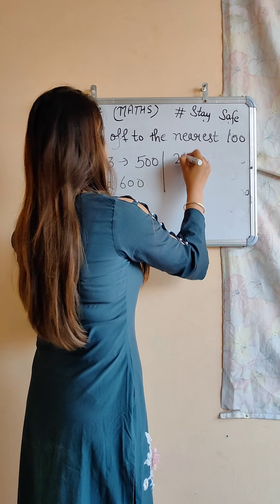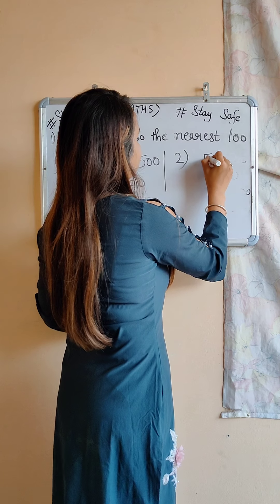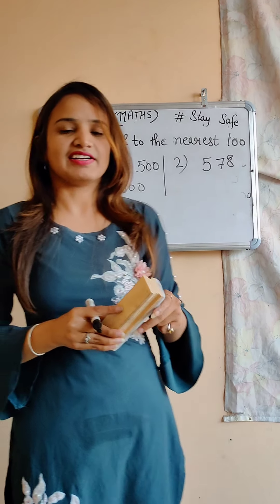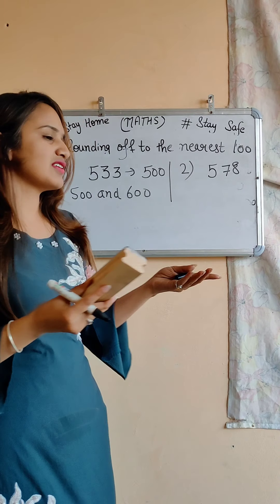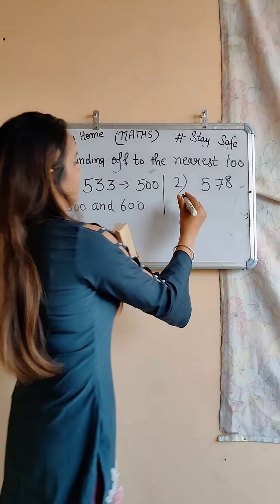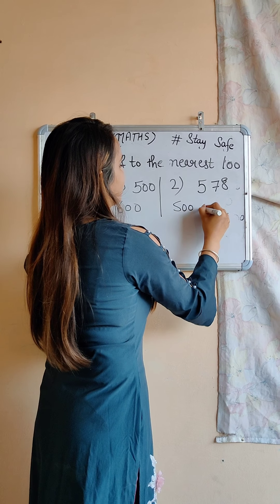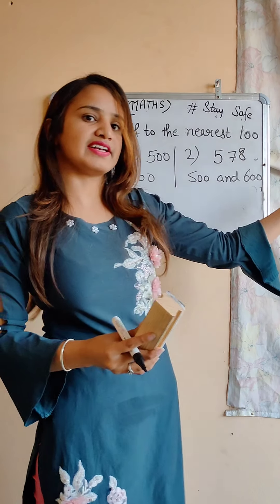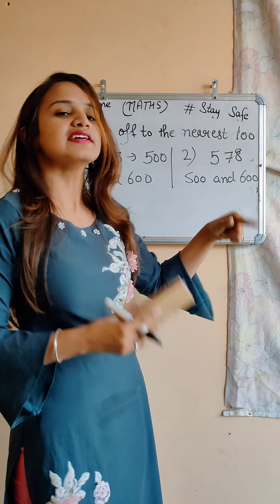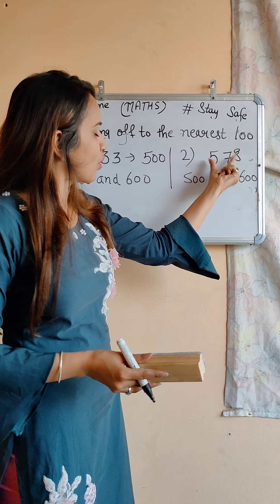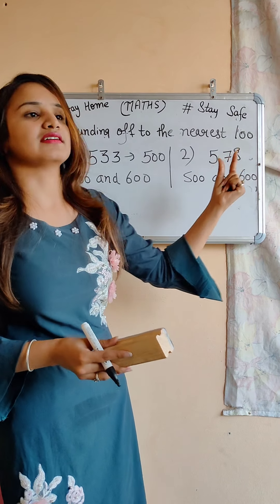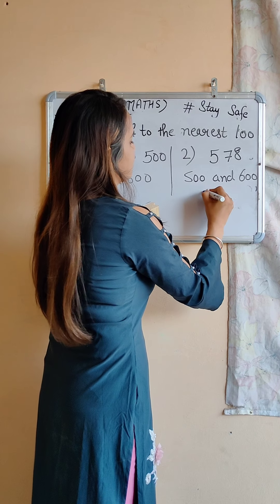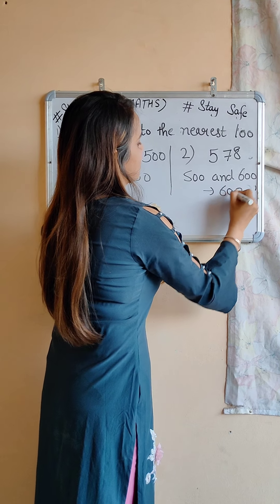Next we will take a second example. 578 lies between 500 and 600. But in this case it is more closer to 600. Because 578 is more closer to 600, so our answer is 600.